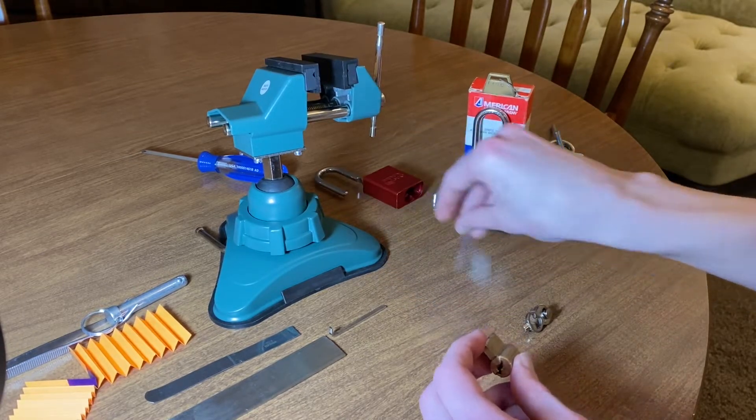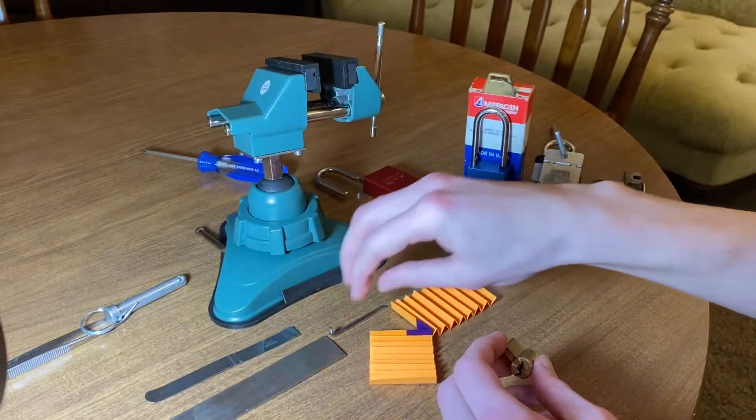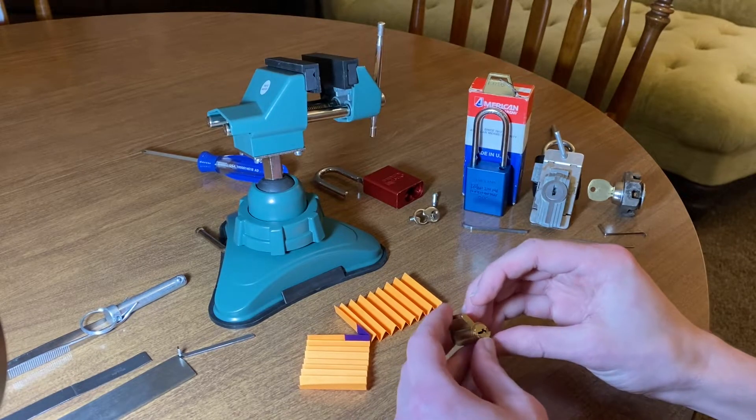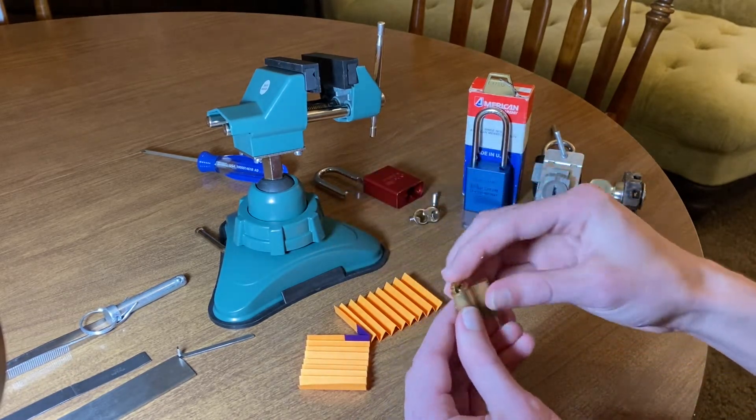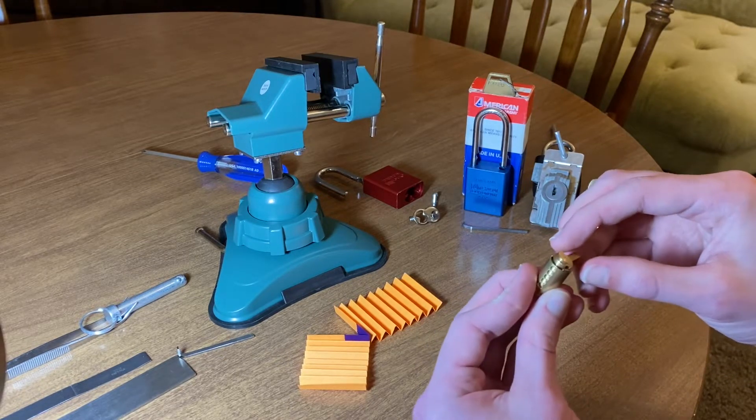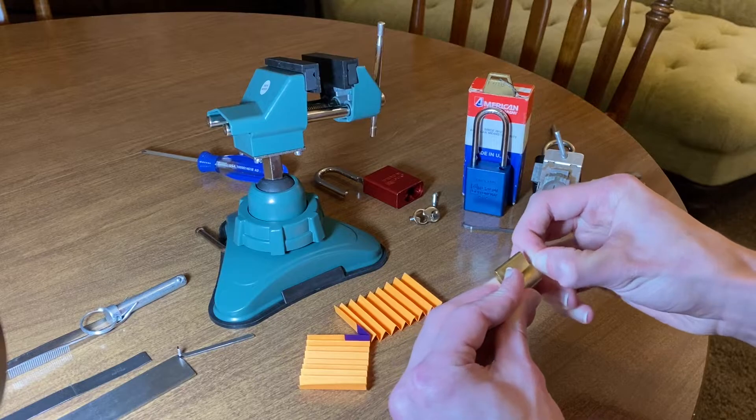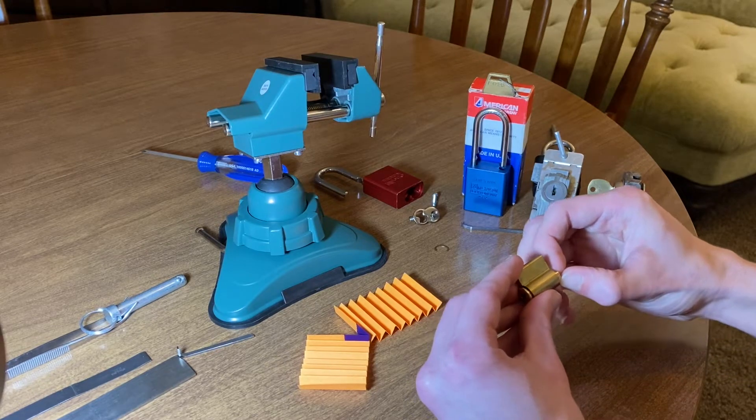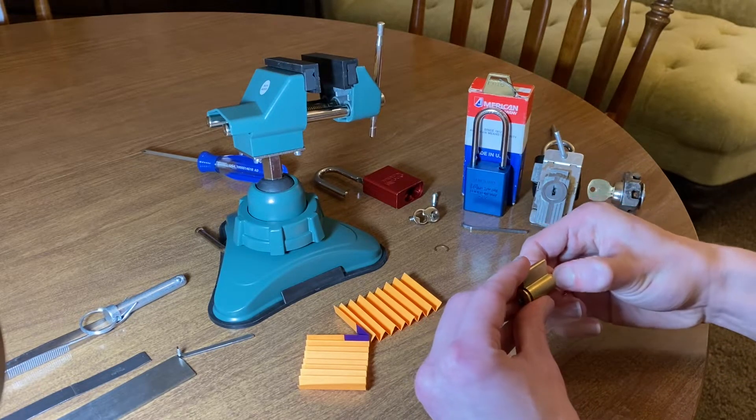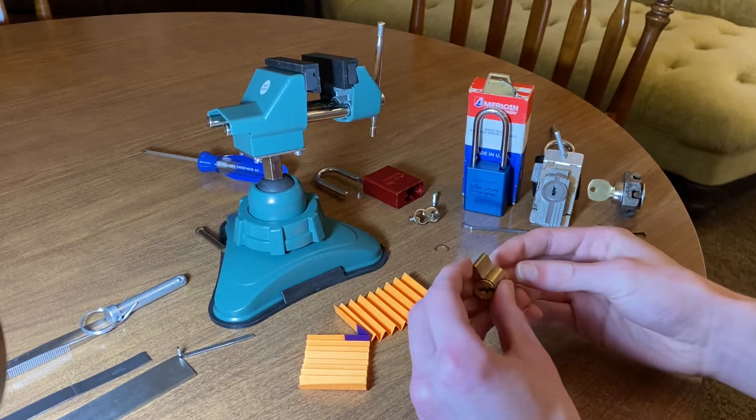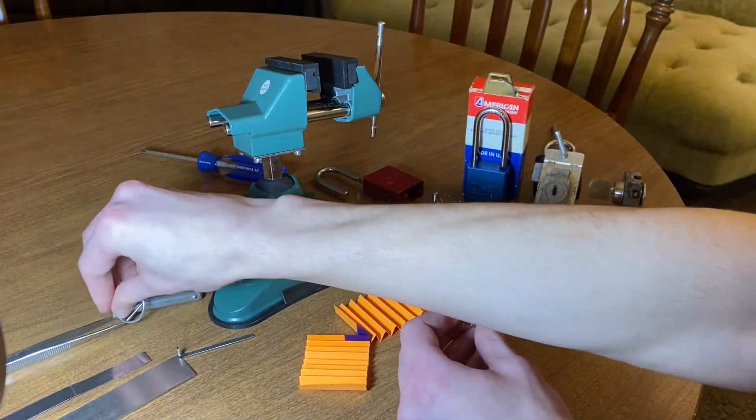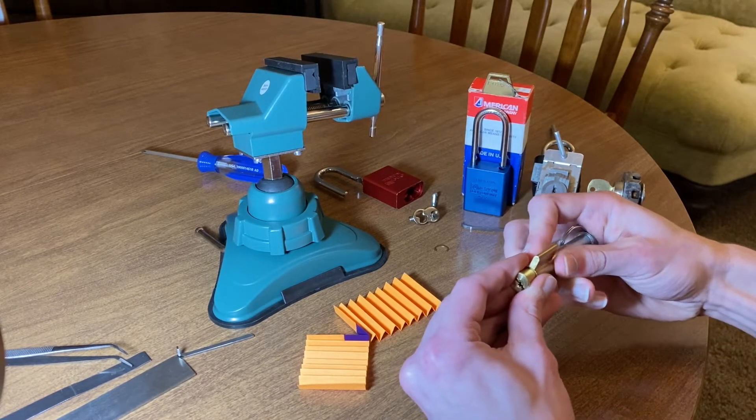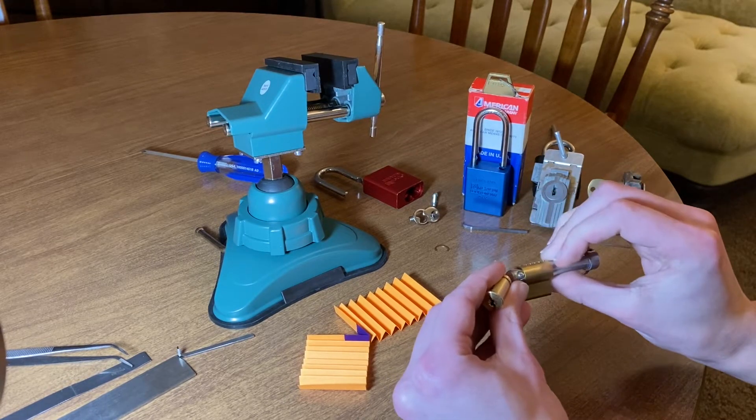Place that. And, you know what? I'll put this up here so I can put my pinning tray right there. There we go. Remove the C clip. Turn the core to a better position. Grab my follower. Make sure I won't dump any key pins. And push it through.